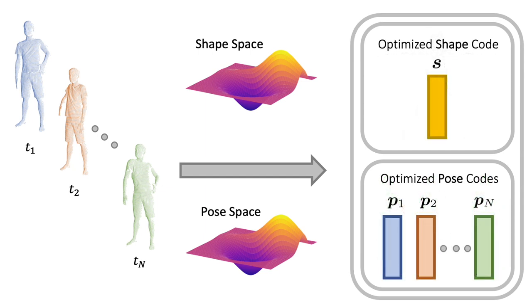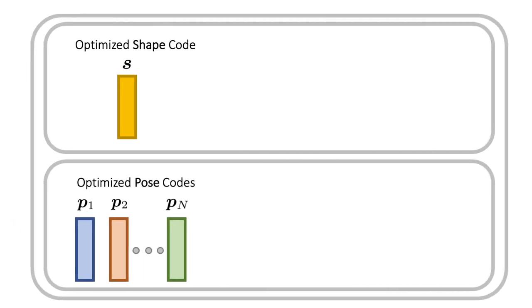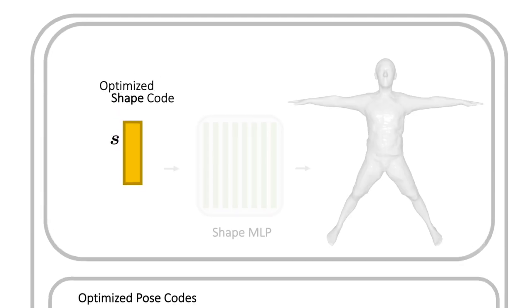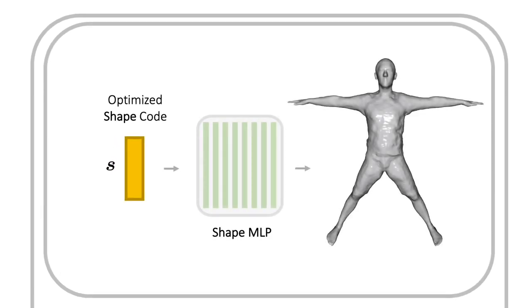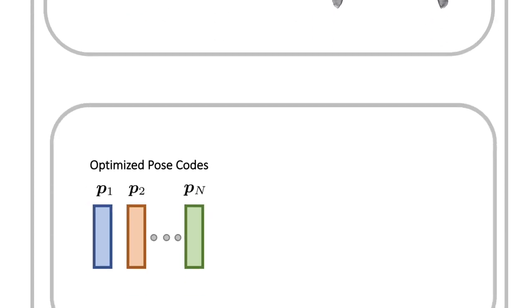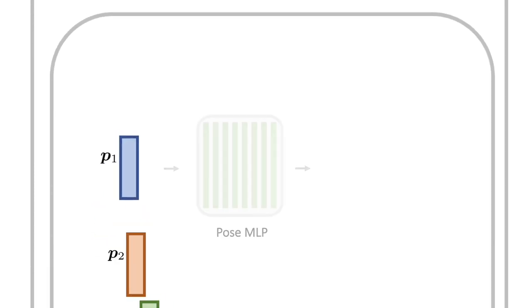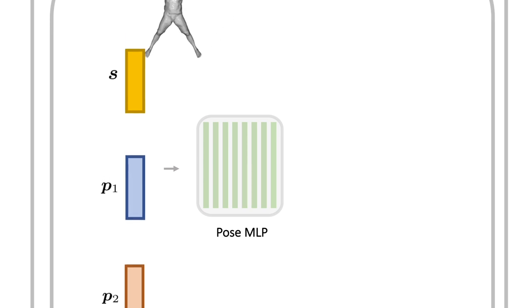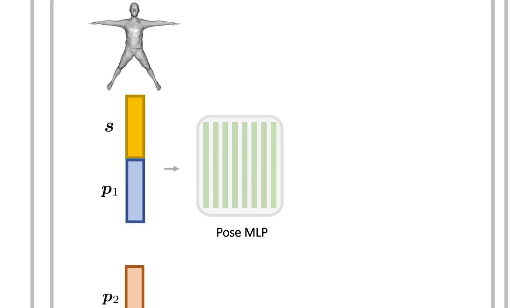After jointly optimizing for the shape and pose codes, to reconstruct the input sequence, our approach only requires extracting the canonically posed shape once. We decode the optimized shape code S for every query point X in a 3D grid, and then run Marching Cubes to extract the surface. Finally, we deform the reconstructed canonical mesh into every N frame in the input sequence by querying the deformation vector for every vertex in the canonical shape.